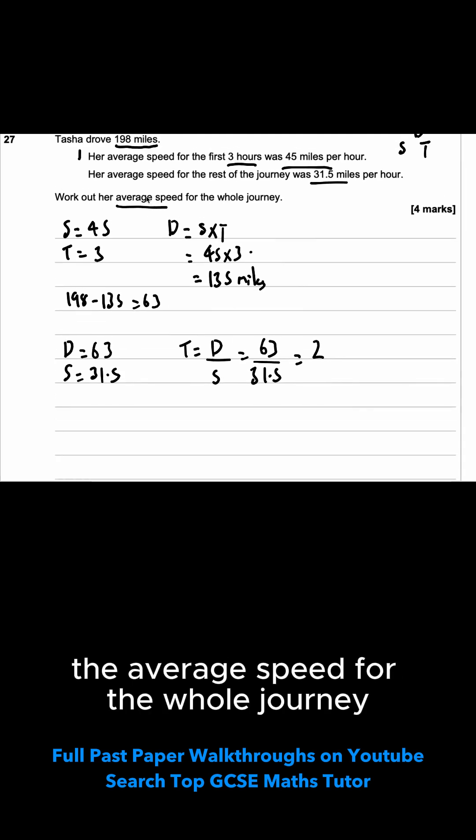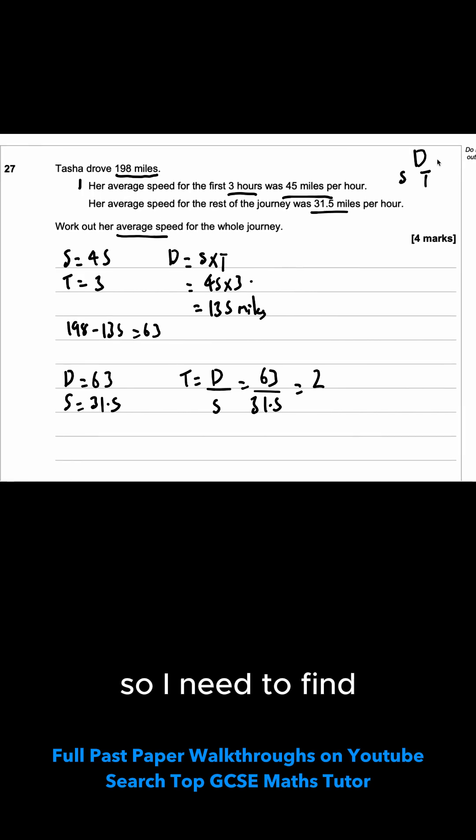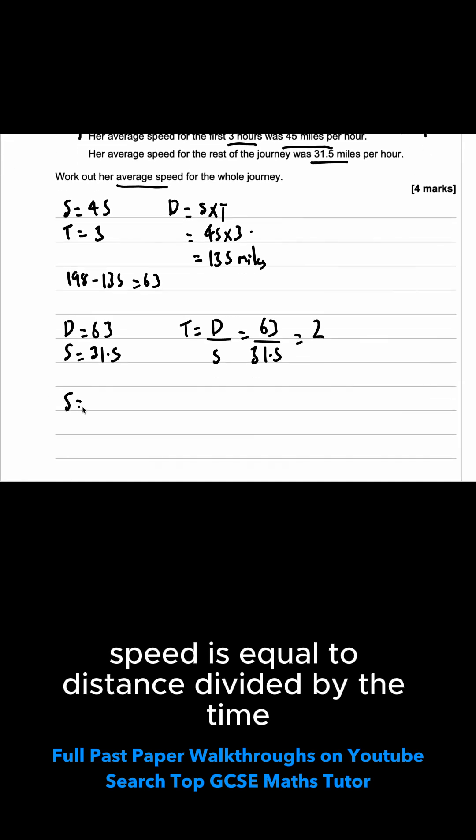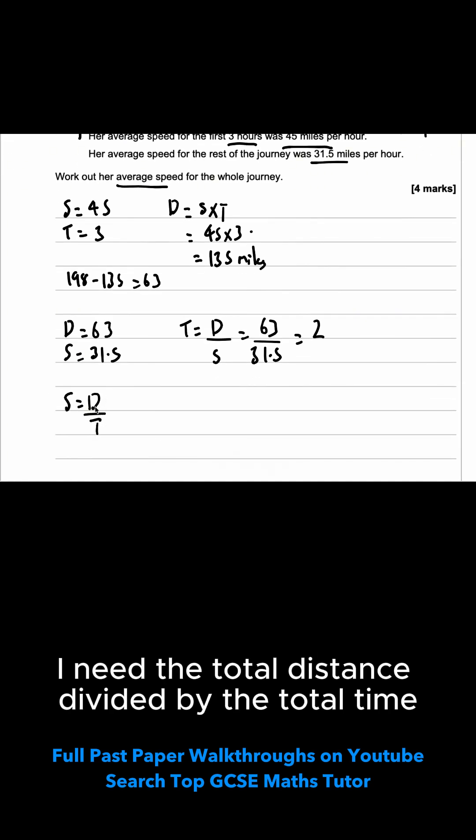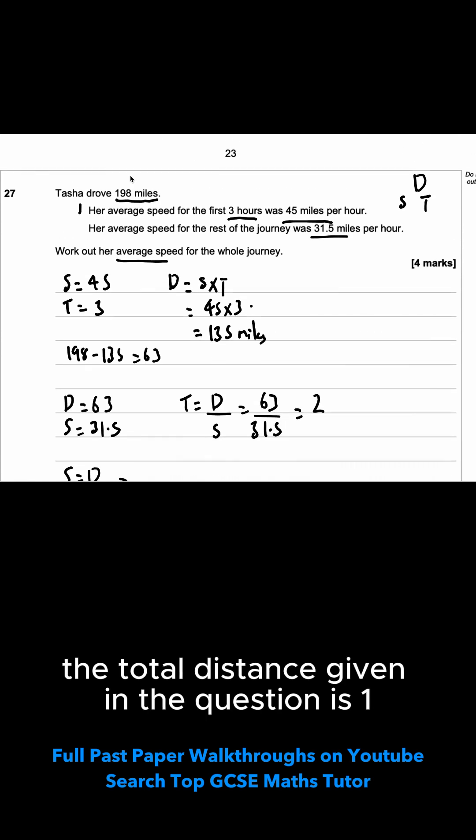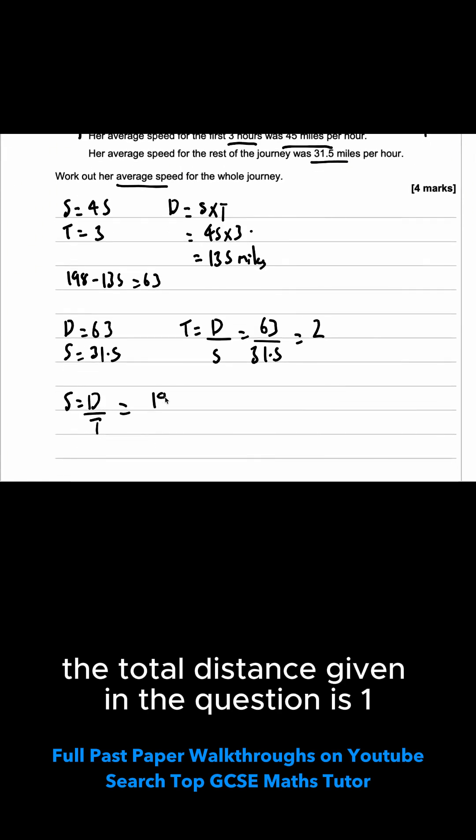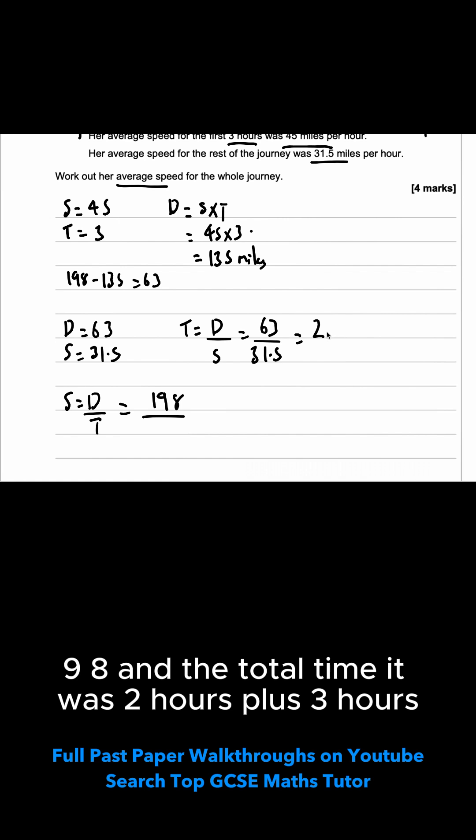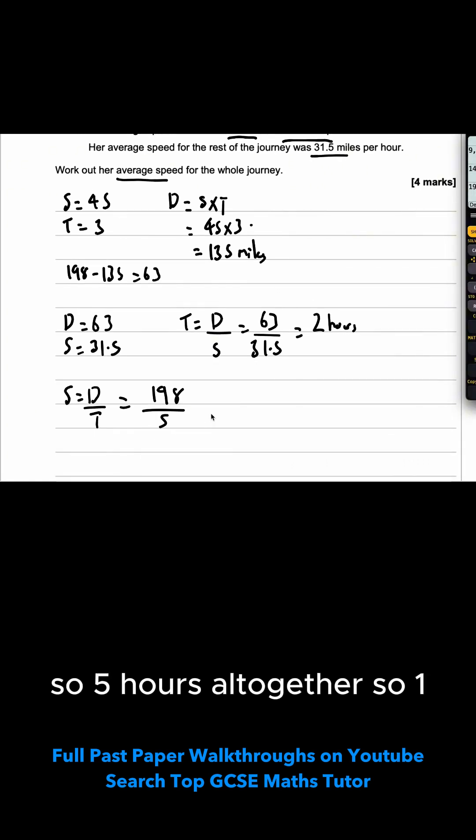I just need to finish this off. I'm trying to find the average speed for the whole journey. So I need to find speed is equal to distance divided by the time. I need the total distance divided by the total time. The total distance given in the question is 198. And the total time it was 2 hours plus 3 hours. So 5 hours altogether. So 198 divided by 5 which is 39.6.